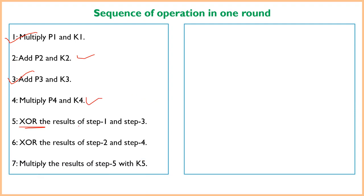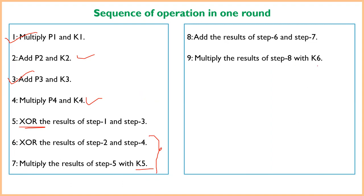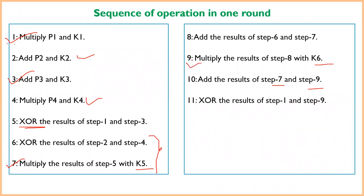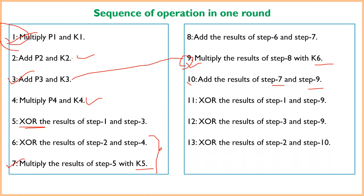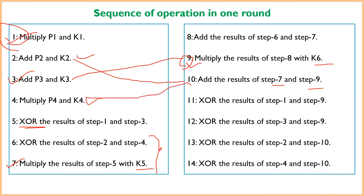Step 7 — multiply the result of step 5 with K5. Step 8 — add the results of steps 6 and 7. Step 9 — multiply the result of step 8 with K6. Step 10 — add the results of steps 7 and 9. Step 11 — XOR the results of steps 1 and 9. Step 12 — XOR the results of steps 3 and 9. Step 13 — XOR the results of steps 2 and 10. Step 14 — XOR the results of steps 4 and 10.